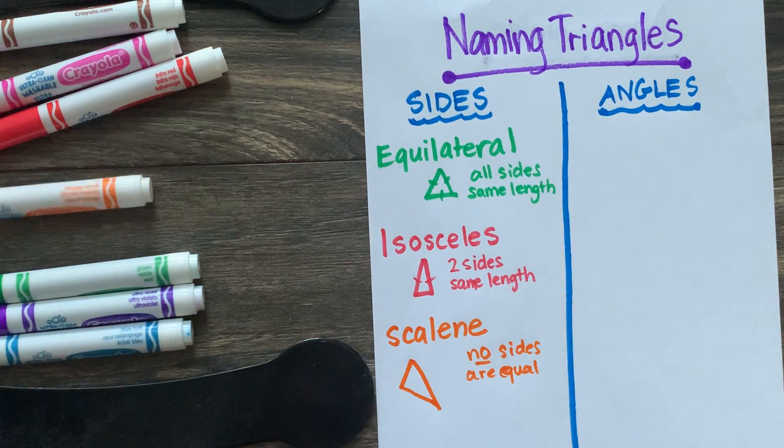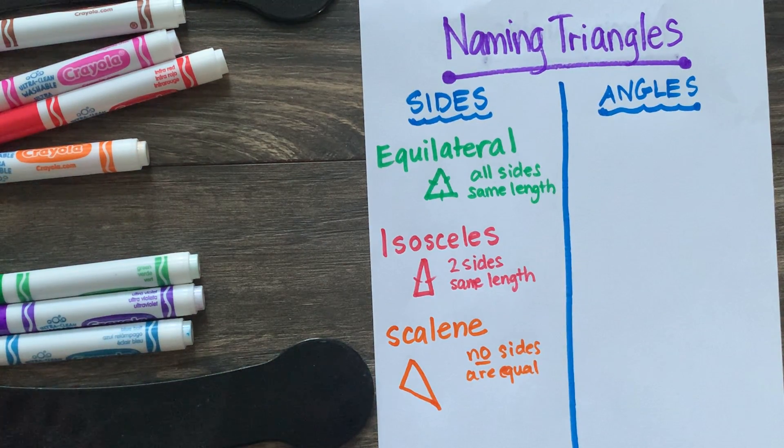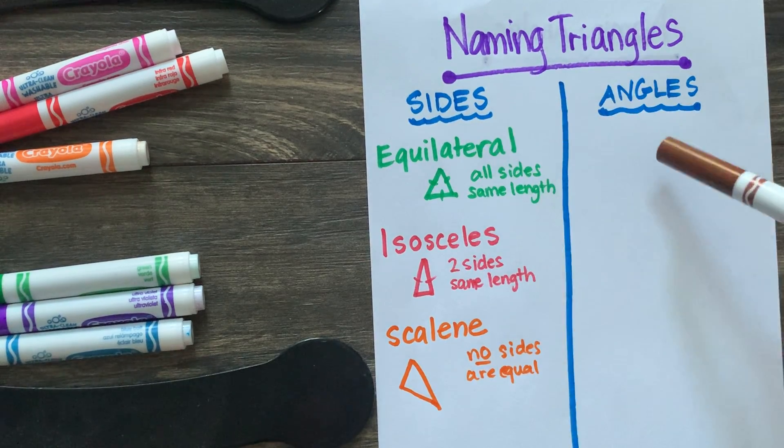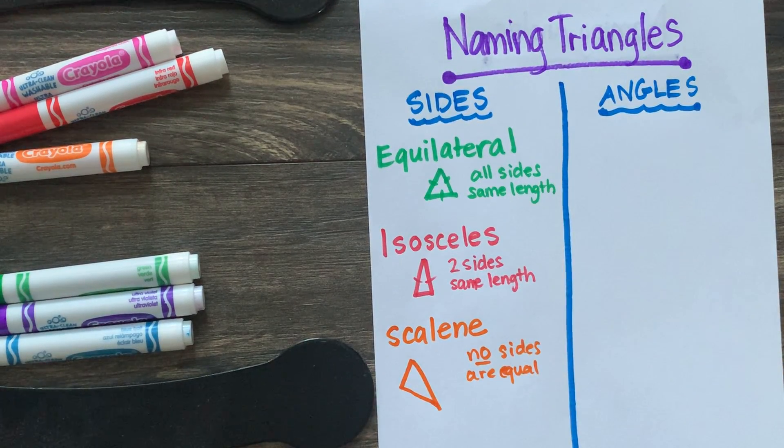Now, when I look at angles, on the other hand, I have different ways that I can make angles as well. So I can name a triangle by its side or by its angles. So let's talk about our angles.